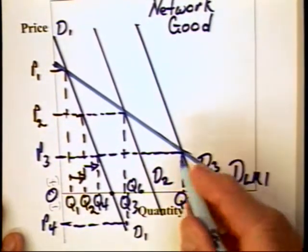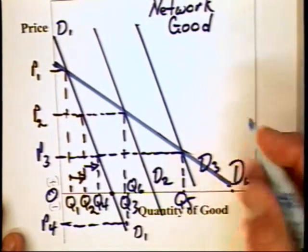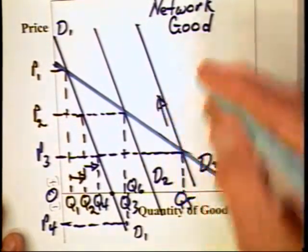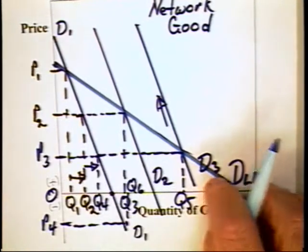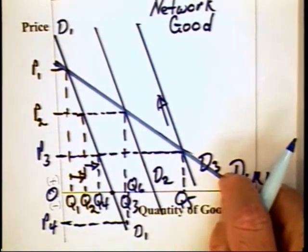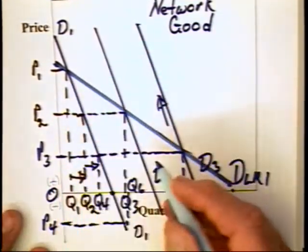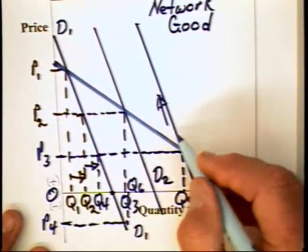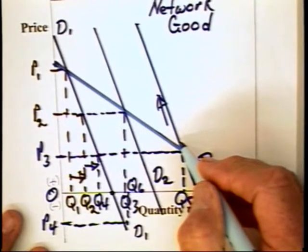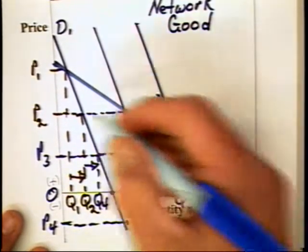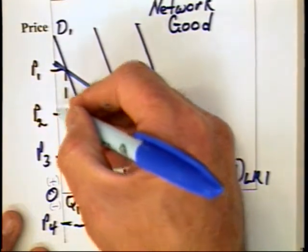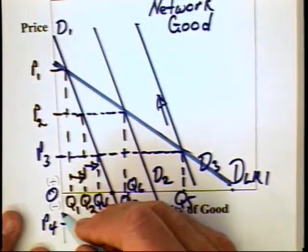And when the firm achieves dominance in the future, then it can, indeed, maybe act like a monopolist, in which case it can achieve monopoly profits. Well, that doesn't necessarily mean that consumers are worse off. Why?